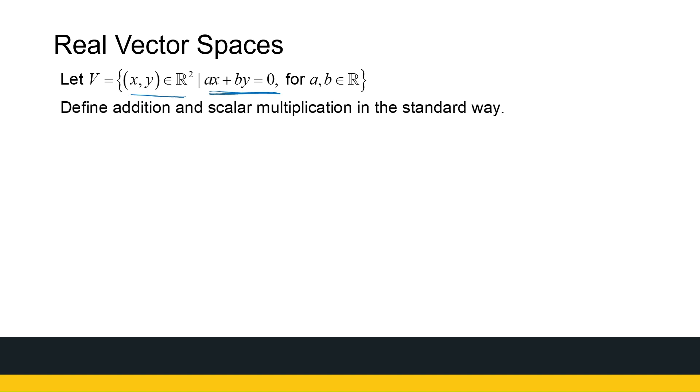So let's just look at what the standard definition of addition and scalar multiplication will be. So if I let u, v, and w be elements of V, where u is equal to (x1, y1), v is equal to (x2, y2), and w is equal to (x3, y3).